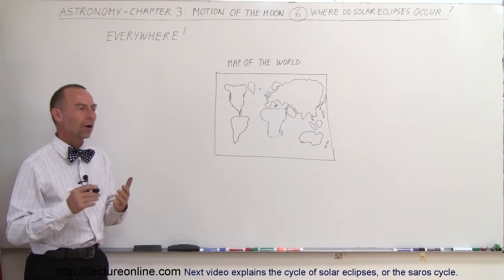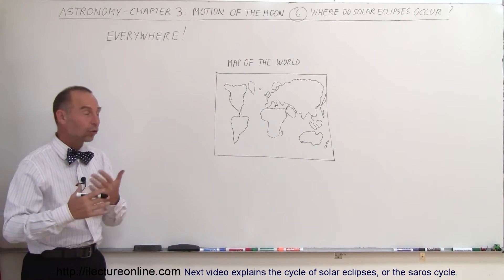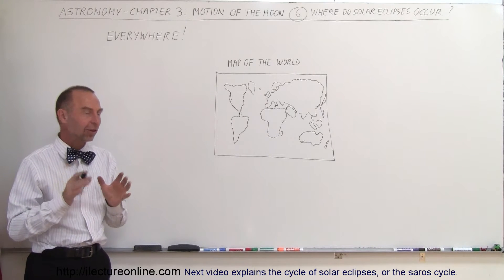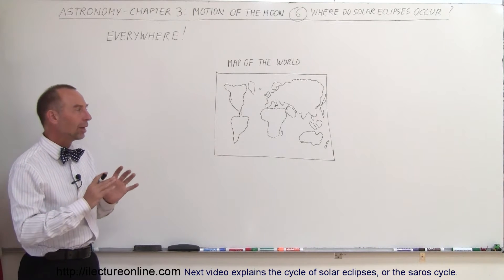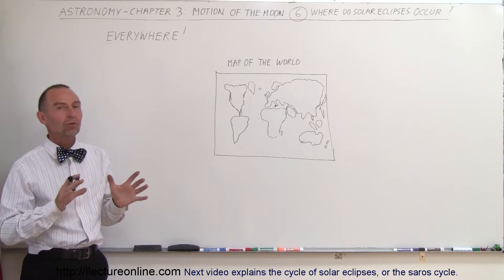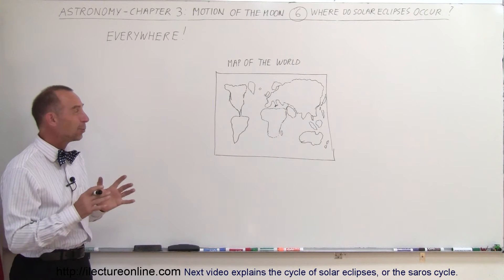It's kind of the luck of the draw. There are certain cycles to solar eclipses, and we'll look at those cycles in a little bit more detail, but really when it comes down to it, over time, solar eclipses will be able to be seen from just about anywhere in the world.